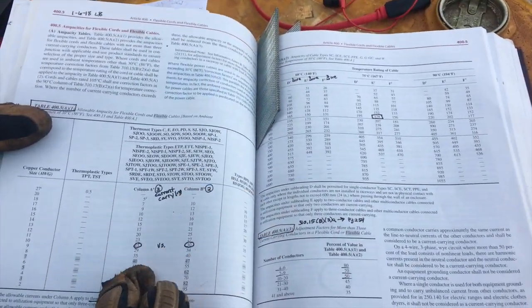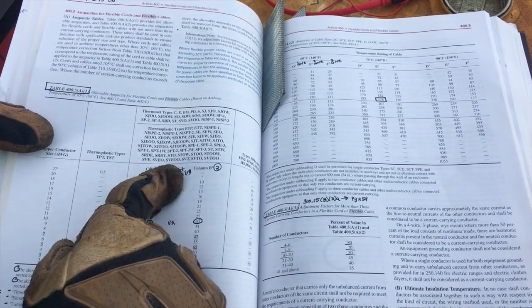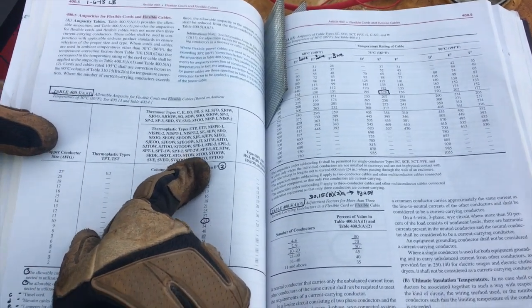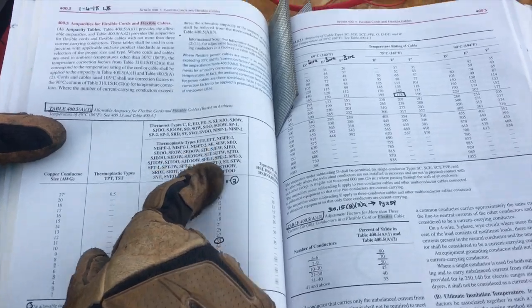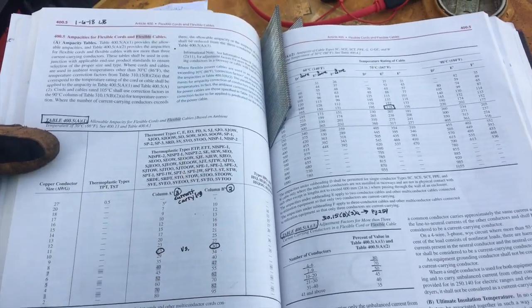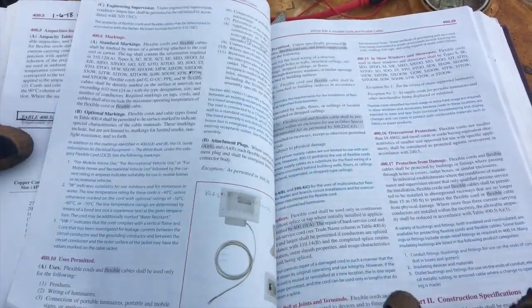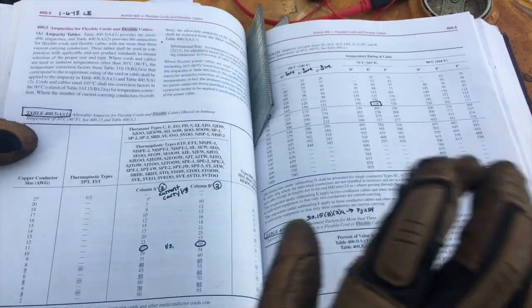You also want to be attentive to what kind of cord you're running. In this case we're in 400.5A and we were a JSOOW, which basically talks about is it extra hard duty rated to know if that cord was right.